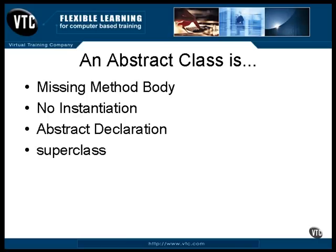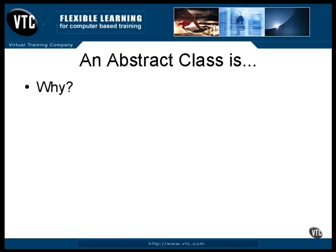The only thing you can do with an abstract class is make it the superclass of another class. It's in this subclass that the body of the method is then defined. If the body of the method is not defined in the subclass, then the subclass is also an abstract class and has to be declared that way.